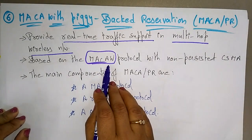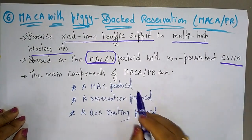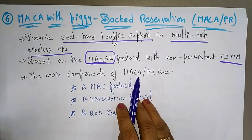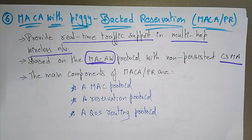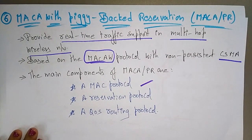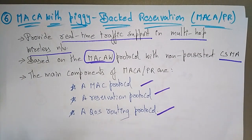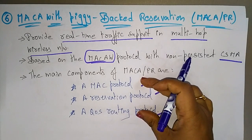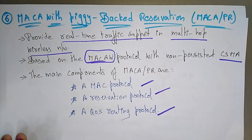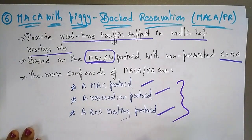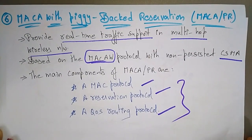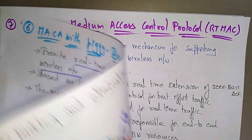MACA-PR is based on MACAW with non-persistent CSMA. The main components of MACAW are: a collision avoidance component, a MAC protocol, a reservation protocol, and a quality of service protocol. These three components — MAC, reservation, and quality of service — are compulsory.